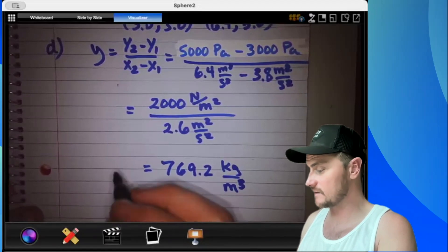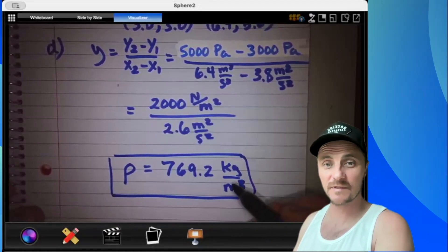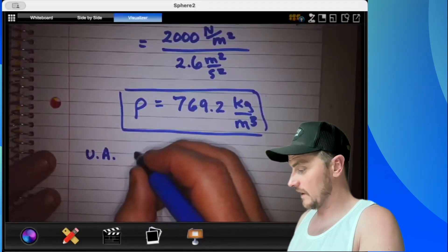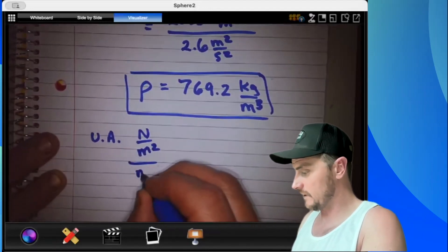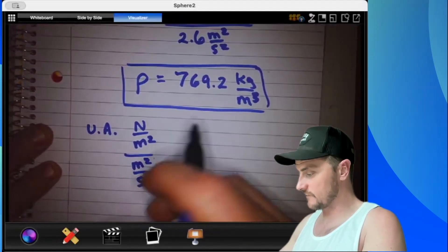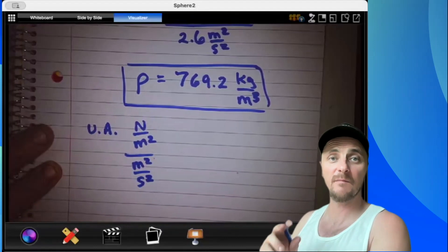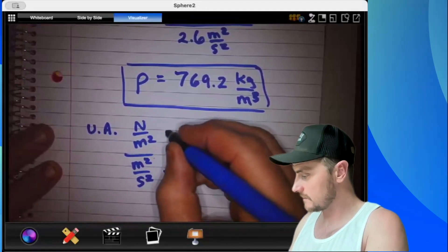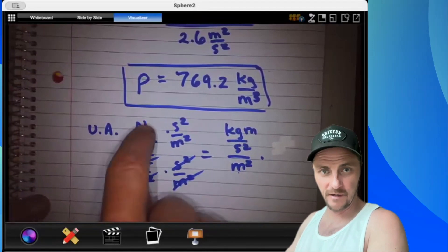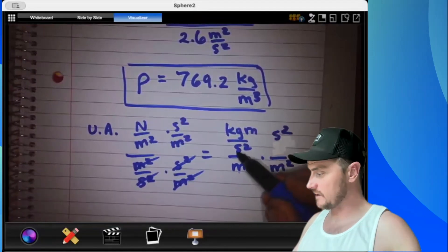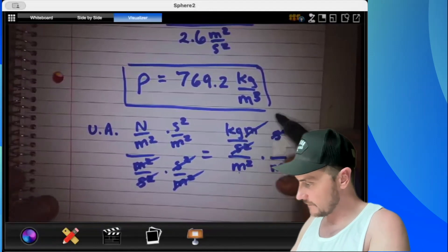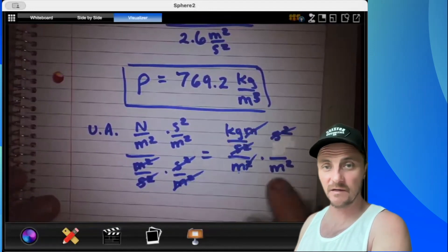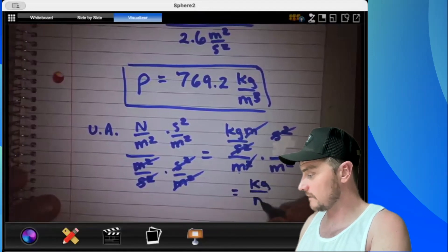Now I'm sure some of you want to see how this ugly unit works out to kilograms per meters cubed. Here comes the unit analysis. Newtons per meter squared all over meters squared per second squared. I'll just flip this whole thing around and put in place of the newton, a kilogram meter per second squared. I'm going to multiply top and bottom by second squared over meters squared. The second squareds cross out, and this meter crosses out with one of these meters, leaving you with meters times meters squared, that's meters cubed, and a kilogram is right there. So finally, kilogram per meter cubed.